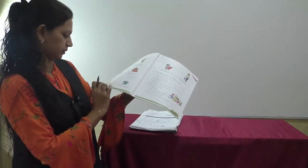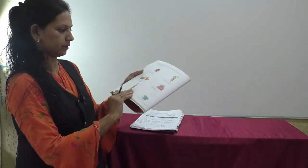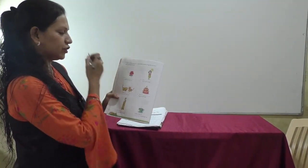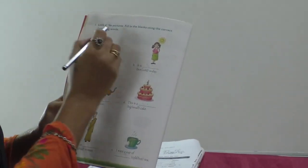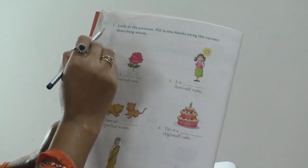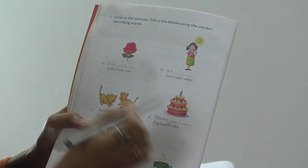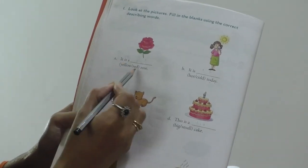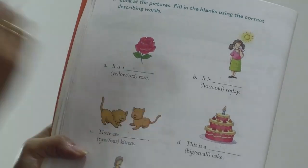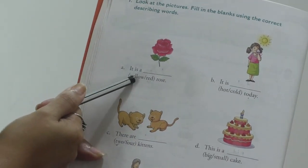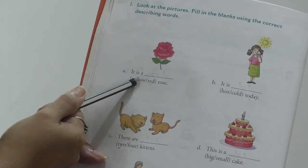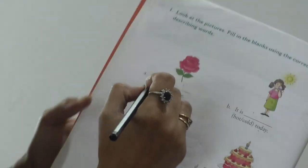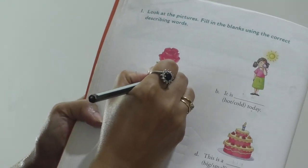Page number 16. The question is look at the pictures, fill in the blanks using the correct describing words means adjective. The first one, it is a yellow or red rose. You can see the color and you have to tell me that. Should I use yellow? Is it correct? No. Which is the correct answer? It is red rose. Right here red.